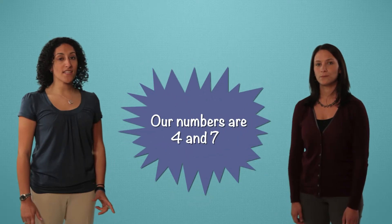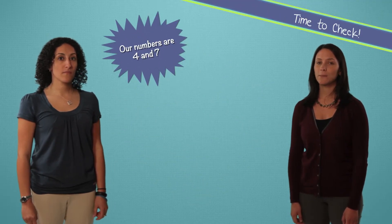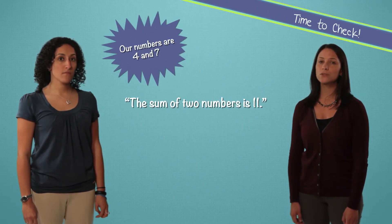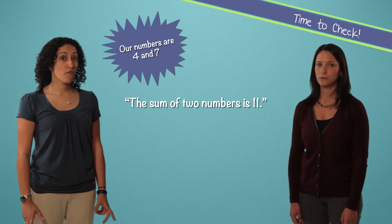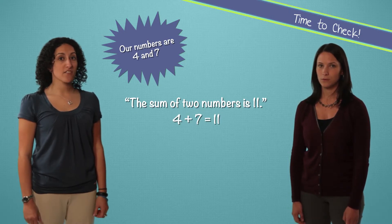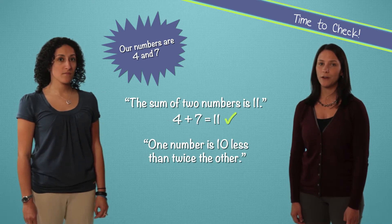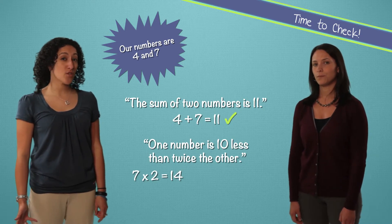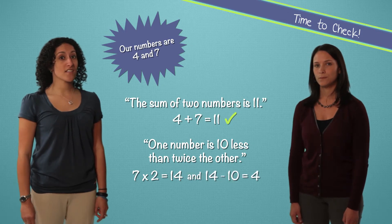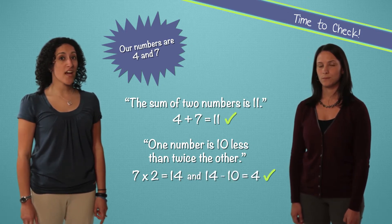So our numbers are 4 and 7. Let's check this by looking back at the word problem. The sum of two numbers is 11. 4 plus 7 equals 11. All good there. One number is 10 less than twice the other. Well, 7 times 2 equals 14. And 4 is 10 less than 14. That checks. Great!